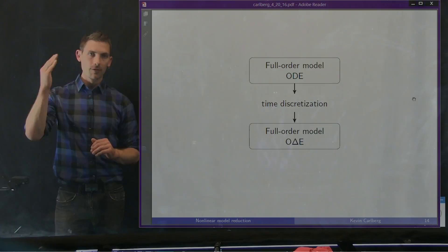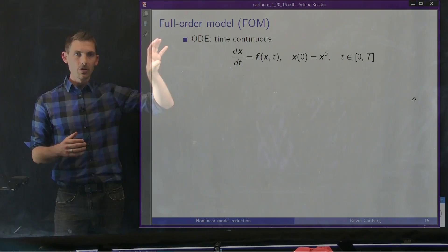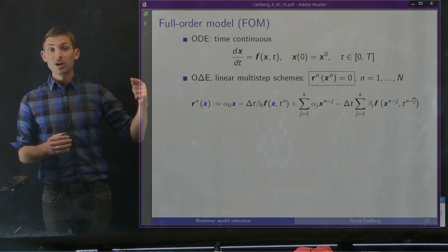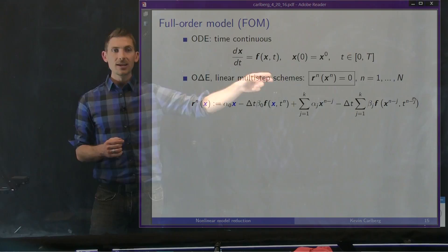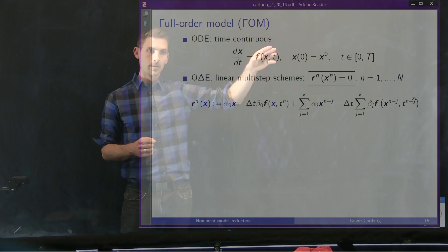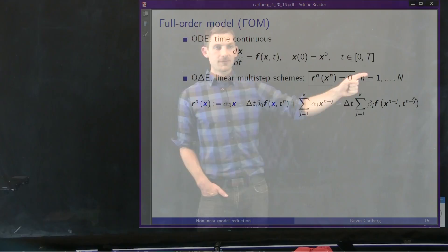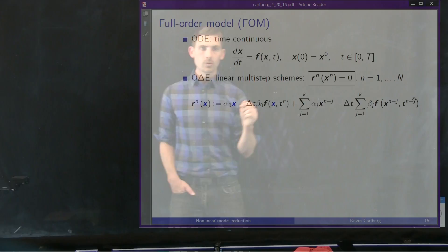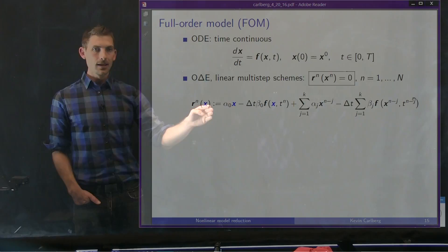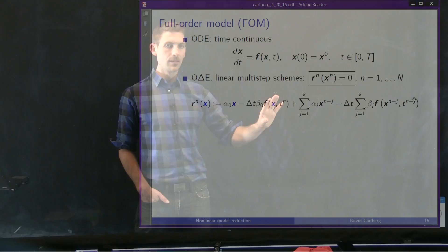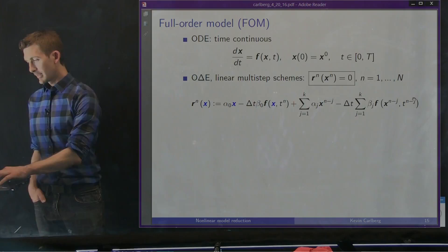First, a review of how a full order model is discretized in time. Starting with the full order model ODE, we apply a time discretization method. If we apply a linear multistep scheme, at each time step n we must solve a system of nonlinear algebraic equations where R maps ℝⁿ to ℝⁿ — with N being say 10 million — for big N time instances. The residual is defined by both the unknown variable x and the solution at the previous k time steps. If β₀ is not zero, we have an implicit k-step linear multistep scheme.